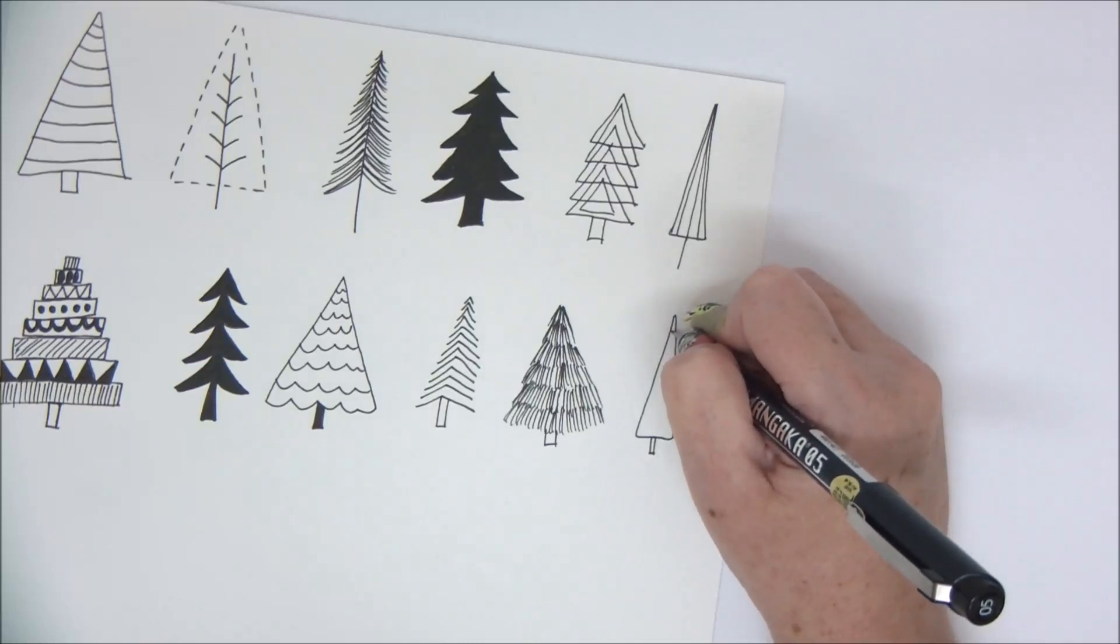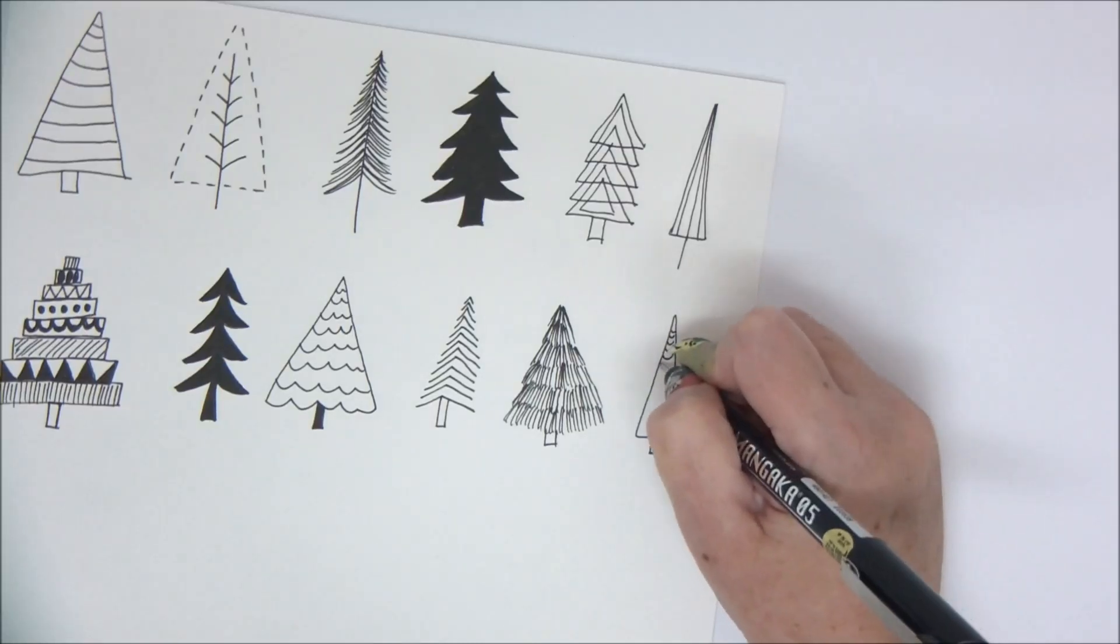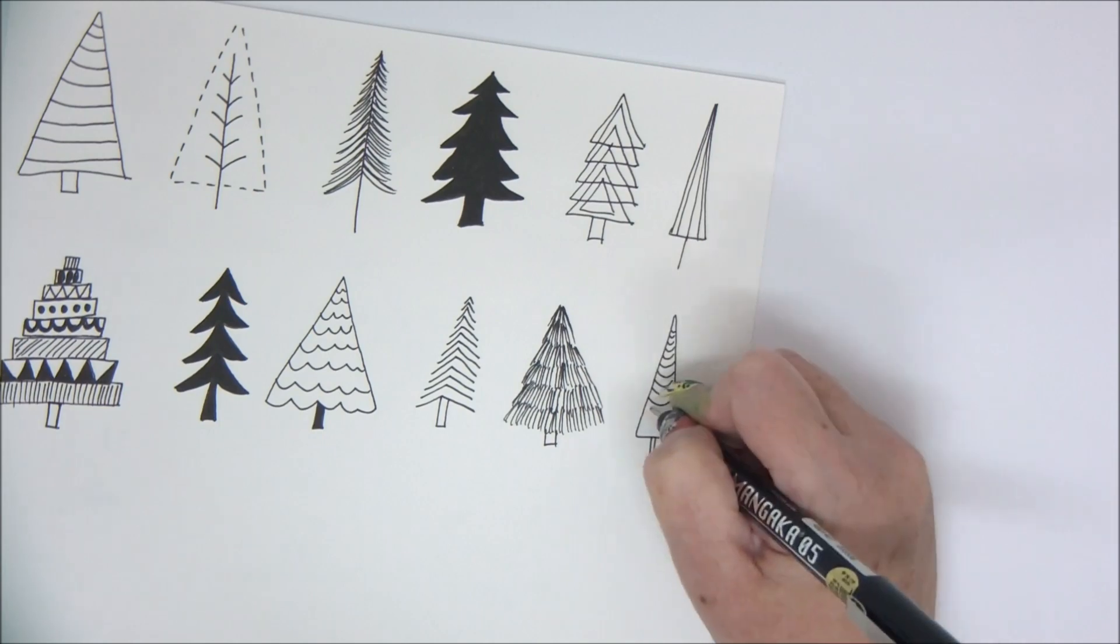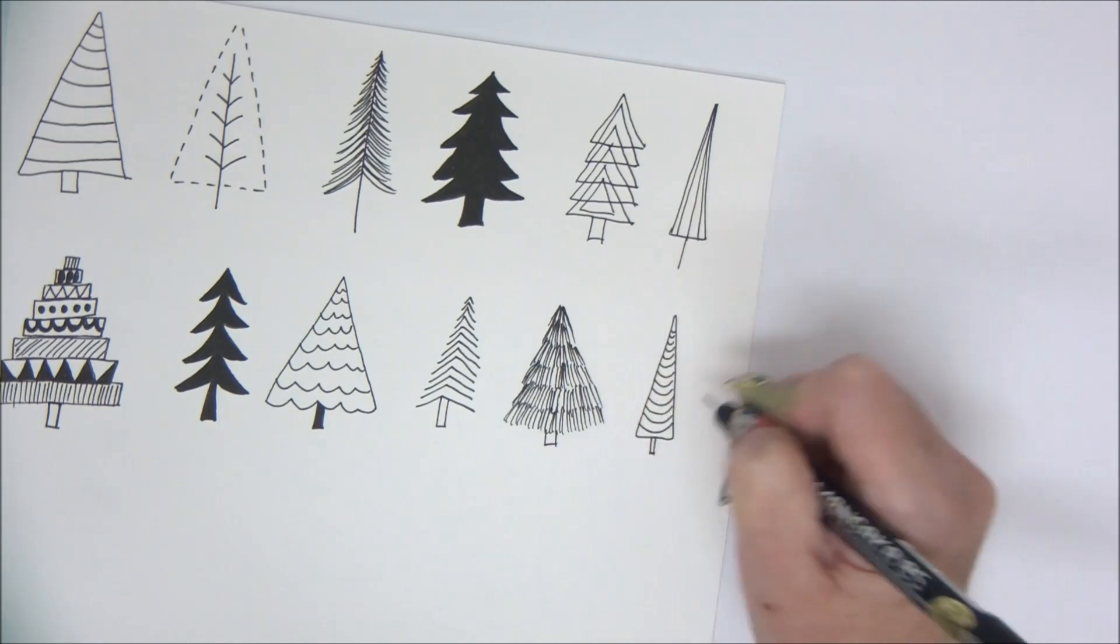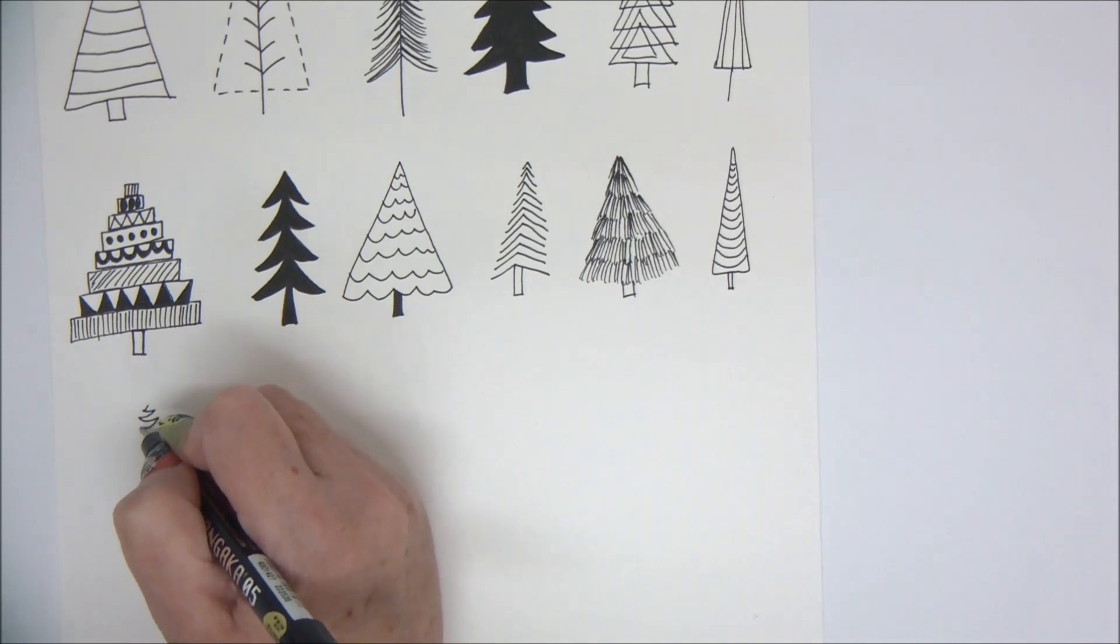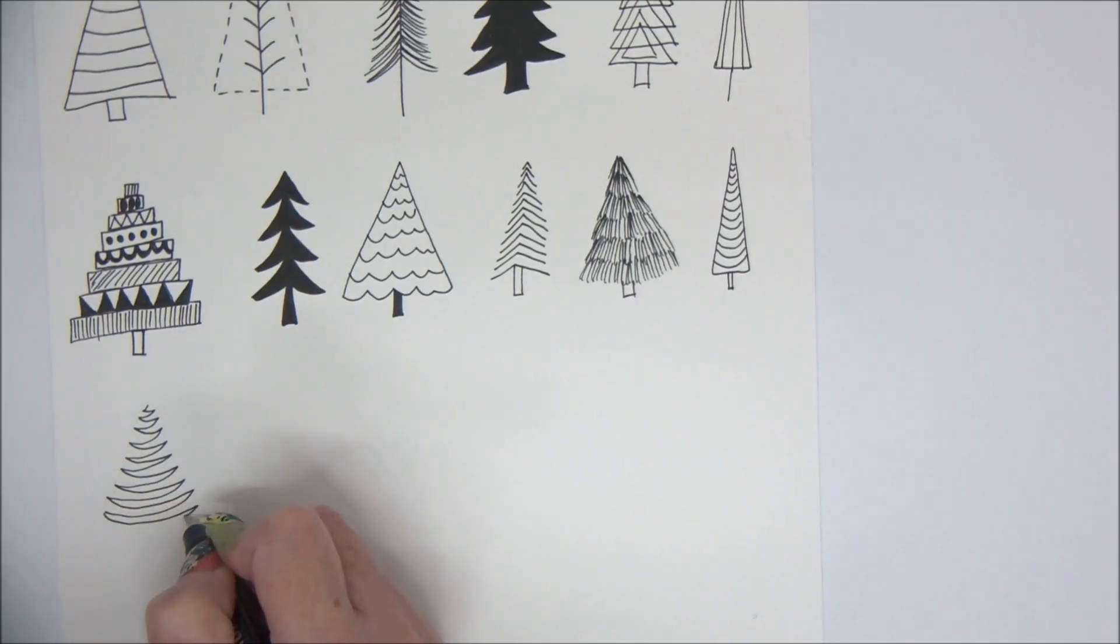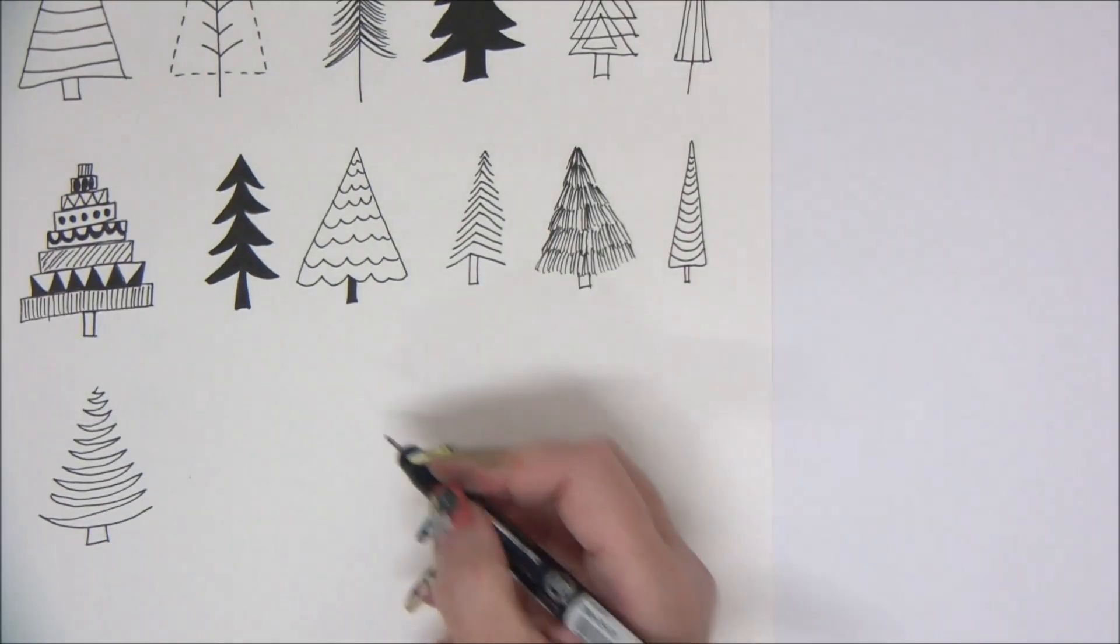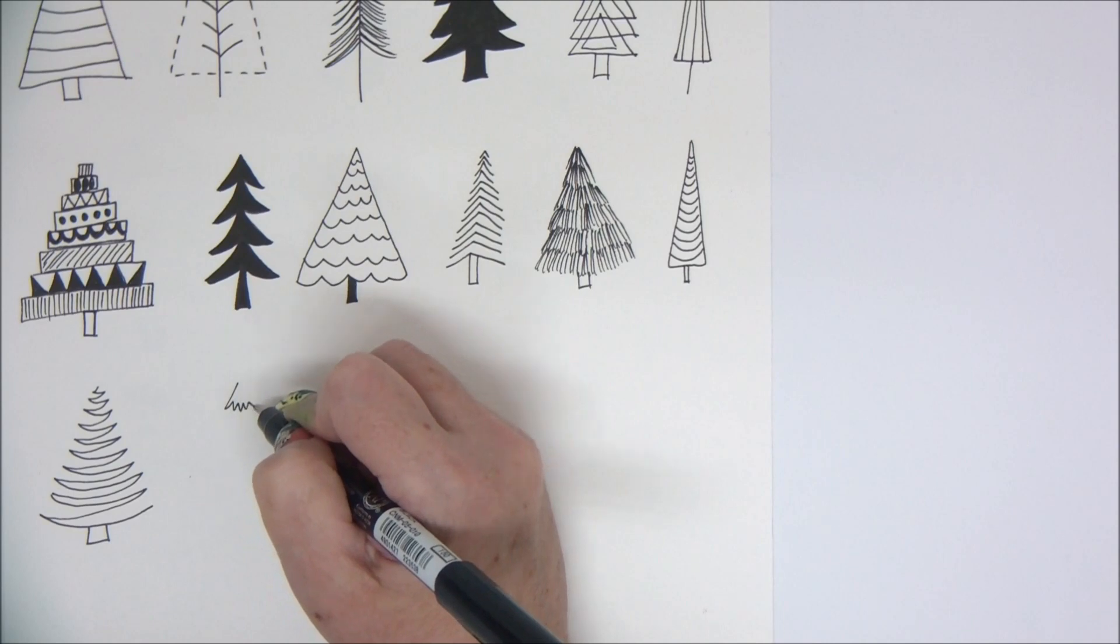Just add curved lines inside like this. This one is really cool—just one line that goes from one side to the other with a curved edge, and you have a Christmas tree. It took what, a second to make? Really, really, really easy ideas.